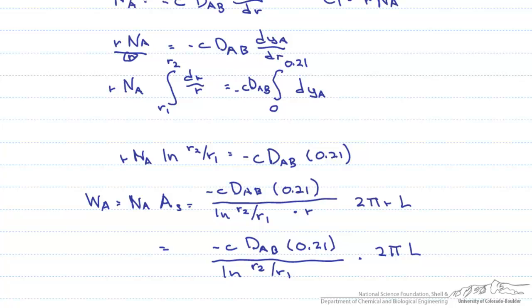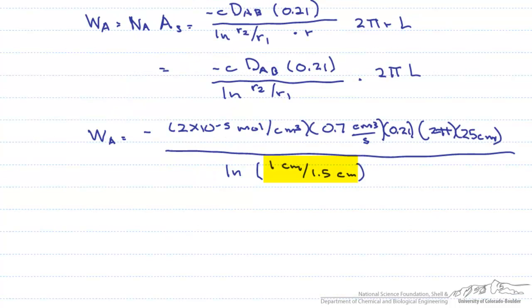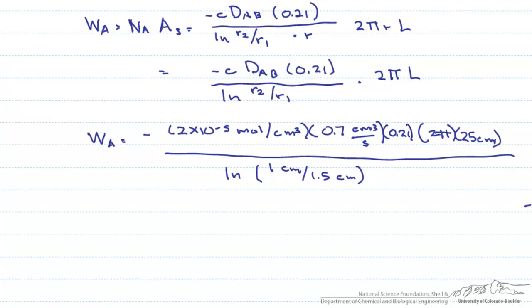Let's put our numbers in that we were given in the problem. Notice that R2 and R1 are based on 0 equaling the center of the carbon rod. We find that the rate of oxygen production is negative 1.14 times 10 to the minus 3 moles per second.